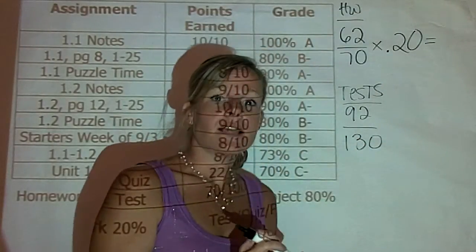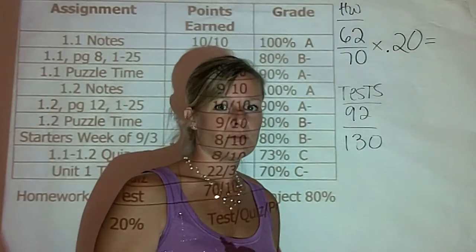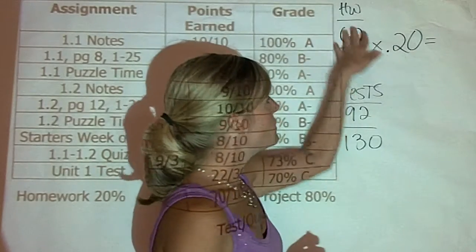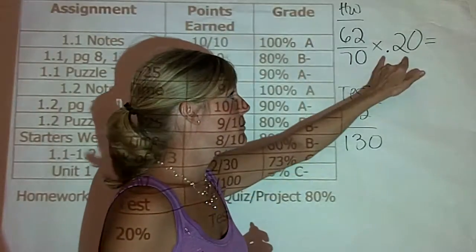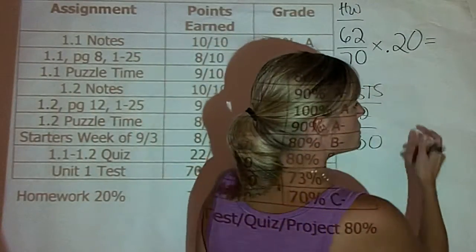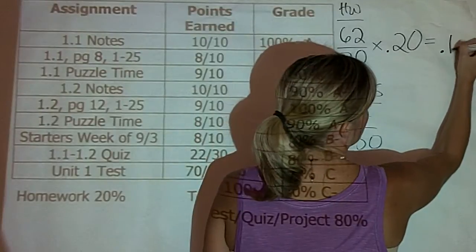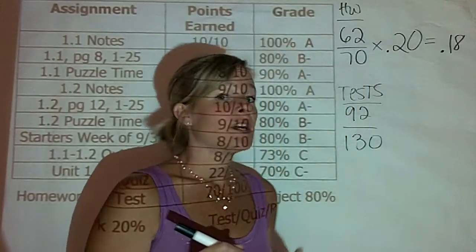When you do that, you're going to get a decimal that tells you part of the points that they earned for homework. So, when you take 62 divided by 70 and multiply that by the 20% or .20, you end up getting .18.